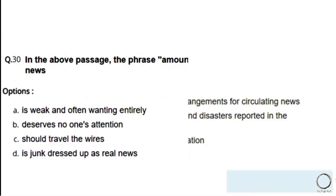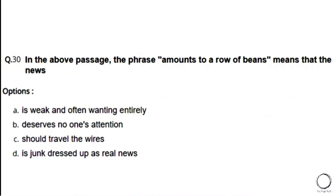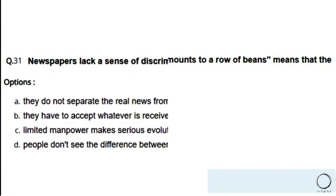Next: In the passage, the phrase 'amounts to a row of beans' means the news — a) is weak and often wanting, b) deserves no one's attention, c) should travel the wires, d) is junk dressed up as real news. The right answer is option B — deserves no one's attention.